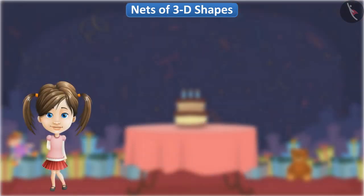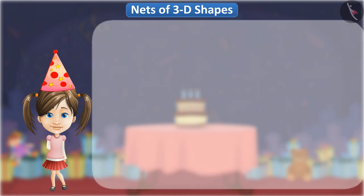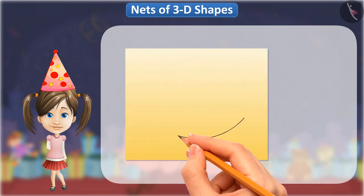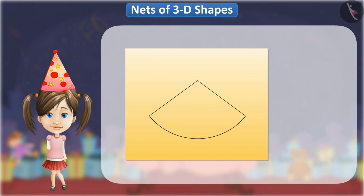You must have worn a birthday cap on your birthday. It is shaped like a cone. If you cut a cone along a point on its oblique surface and along the line going from the vertex, you will get the cone net in this way. You can definitely make a birthday cap for yourself by making this type of net on a flexible cardboard.